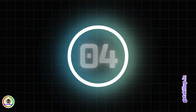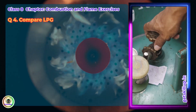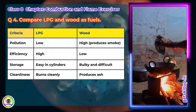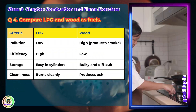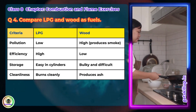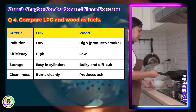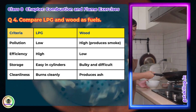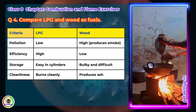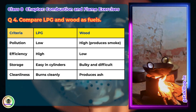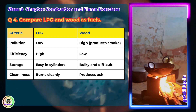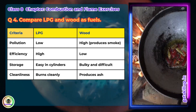Question 4: Compare LPG and wood as fuels. Answer — LPG: pollution low, efficiency high, storage easy in cylinders, burns cleanly. Wood: pollution high, produces smoke, efficiency low, storage bulky and difficult, produces ash.